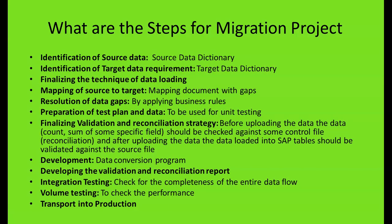What are the steps for a migration project? Assuming migration from SAP ECC 6.0 to SAP S4 HANA 1909, we first do the identification of source data and source data dictionary — where the data is coming from — then identification of target data requirements, finalizing the technique of data loading, mapping of source to target, and creating a mapping document with gaps.